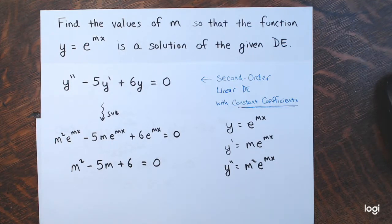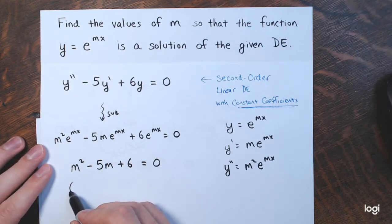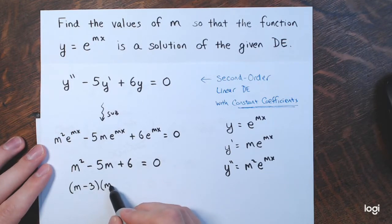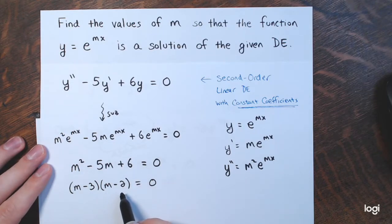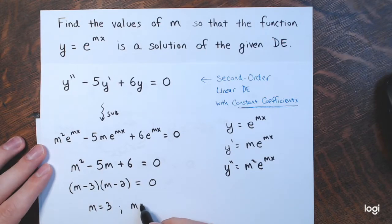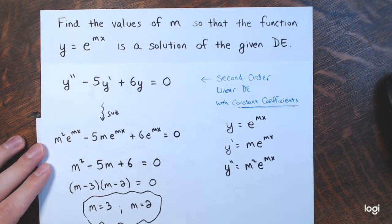It's a nice polynomial equation in m — you could use the quadratic formula or completing the square, but this one is easily factorable. It factors as m minus 3 times m minus 2 equals 0. Using the zero product property, the solutions are m equals 3 or m equals 2 — those are the values of m that satisfy the equation.